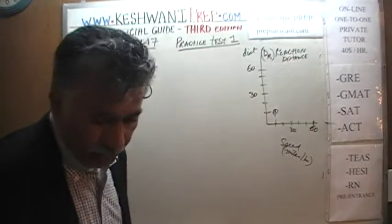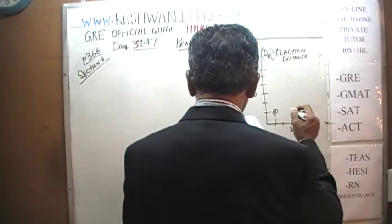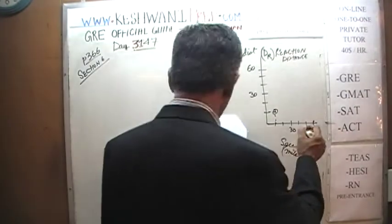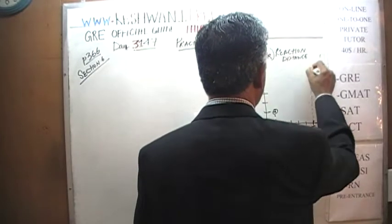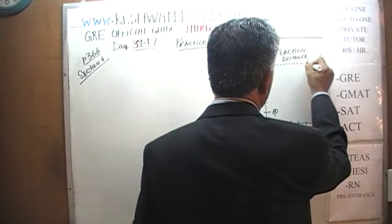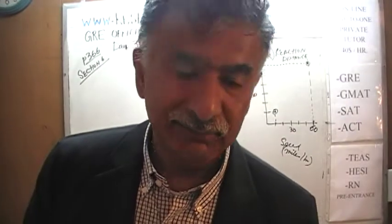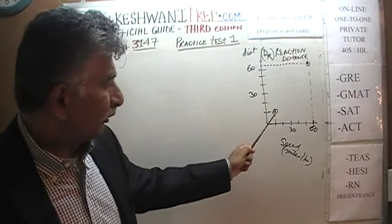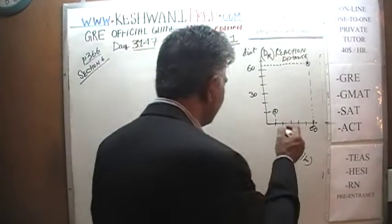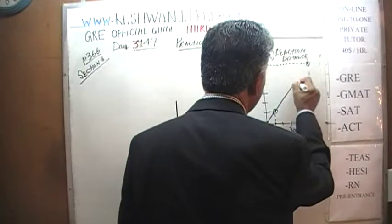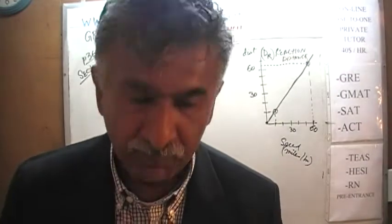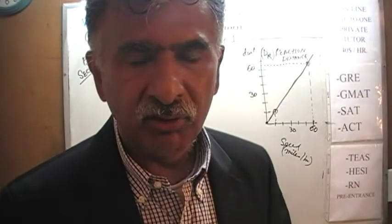Looking at the graph: at 60 miles per hour the reaction distance is about 65 feet. That means the slope is a little more than 1 — it starts at about 10 at 10 mph, but by 60 mph it is 65. We are not going to worry about precision here; we will just draw a freehand line. This is the GRE — we are not performing open-heart surgery. Precision is not required as long as we can identify the right answer.